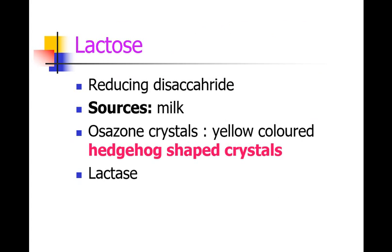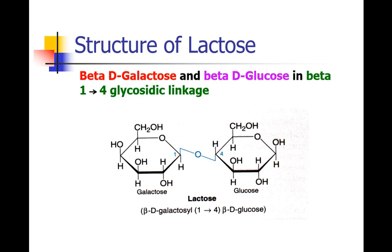Another disaccharide is lactose. Lactose is a reducing disaccharide mainly present in milk. Yellow-colored osazone crystals are produced; these lactosazone crystals are hedgehog-shaped, cotton ball-shaped, head-of-a-pin shaped, or powder-puff shaped. Lactase is the enzyme that can hydrolyze lactose. Looking at the structure of lactose, it is made up of D-galactose and beta-D-glucose, linked by a beta-1,4 glycosidic linkage.